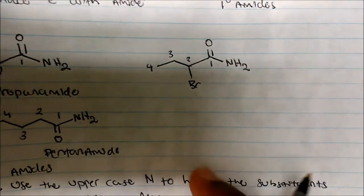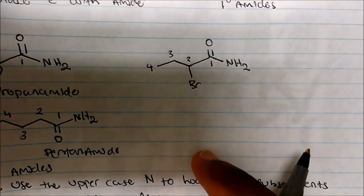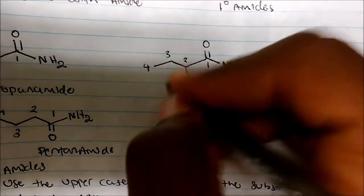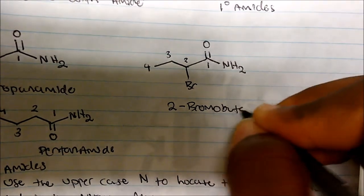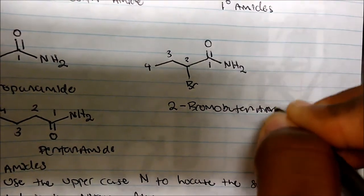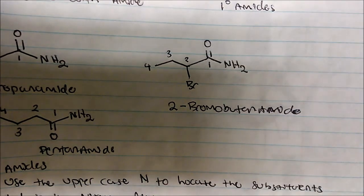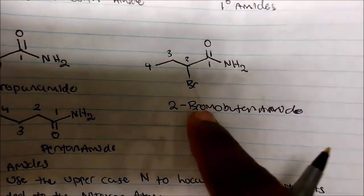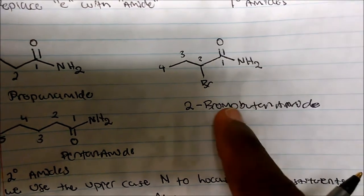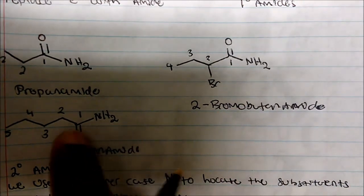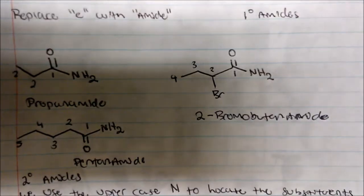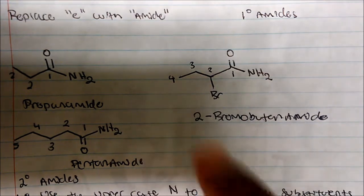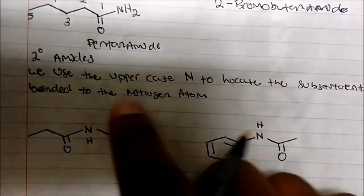For this one, the longest continuous carbon chain is one, two, three, four — so this is butanamide. But we have a bromine on carbon two, so this would be 2-bromobutanamide. Primary amides are not difficult to name — we just drop the -e of the alkane name and add -amide, then list any substituents as usual.